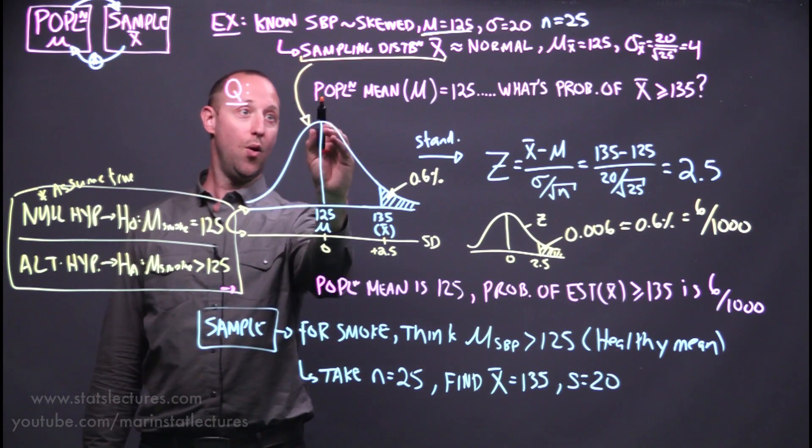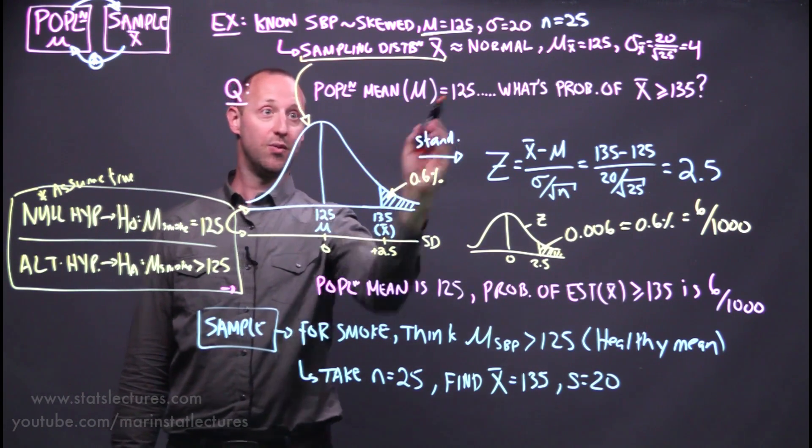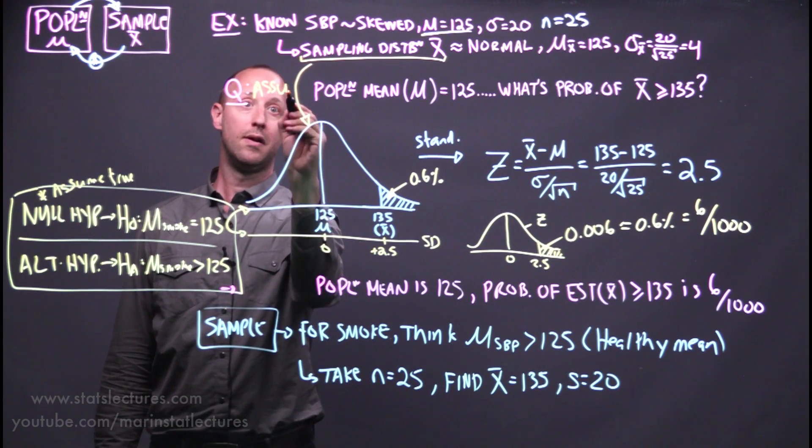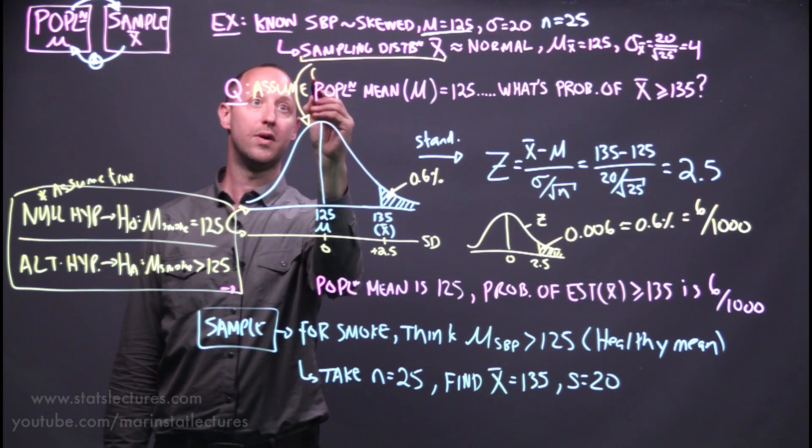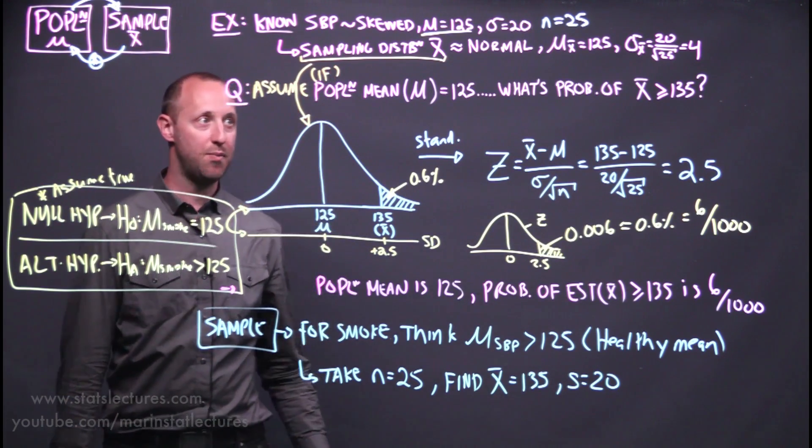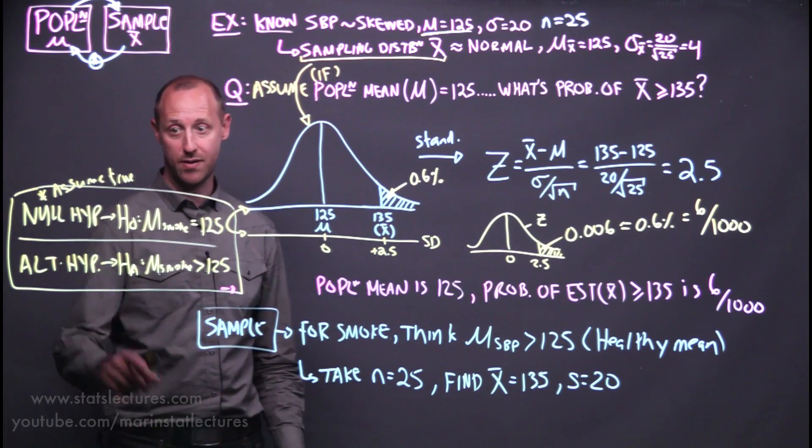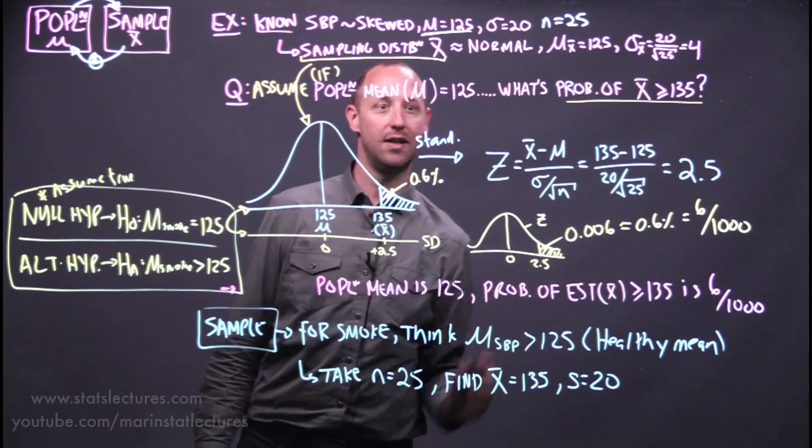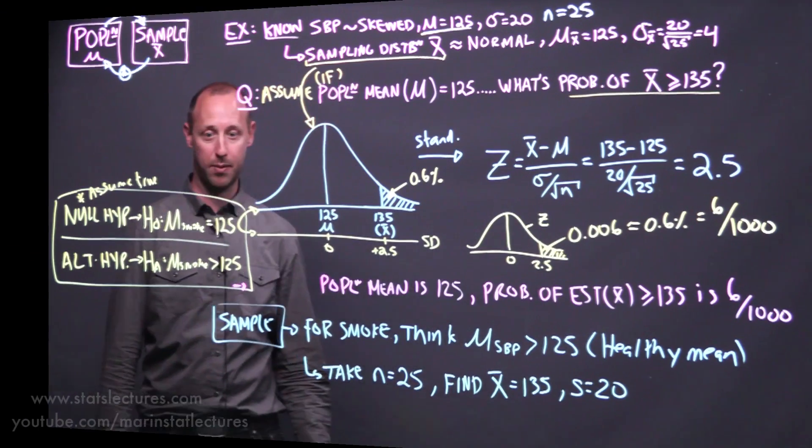Rather than knowing that the population mean is 125, we're going to assume, or we can say if the population mean is 125, if the smokers are no different than the healthy population, what's the probability of seeing what we saw show up in our sample?